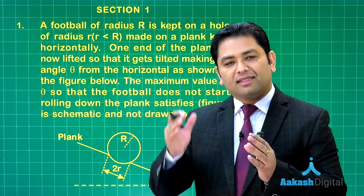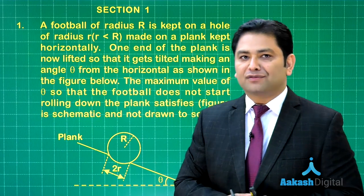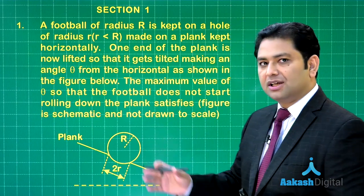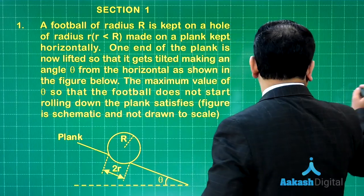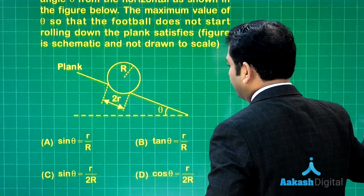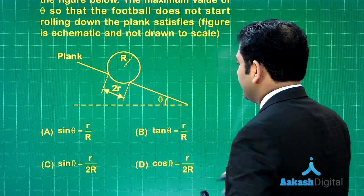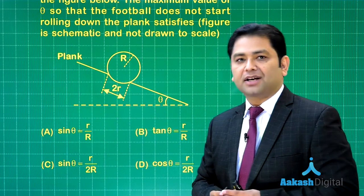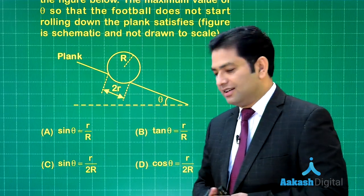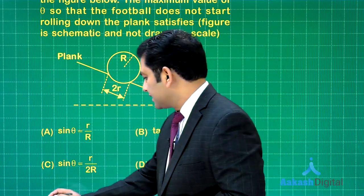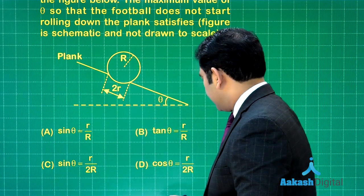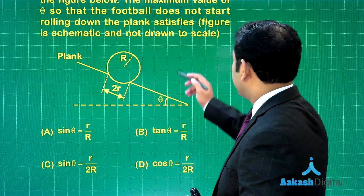So we need to calculate that maximum angle of the inclined plane up to which the ball will not roll. The answer has to be reported in terms of sin theta. Let us try to understand the concept of toppling involved. I will draw a figure here that will give us a nice view.